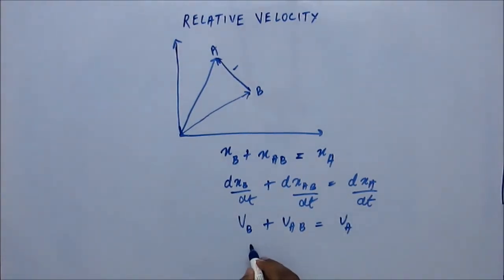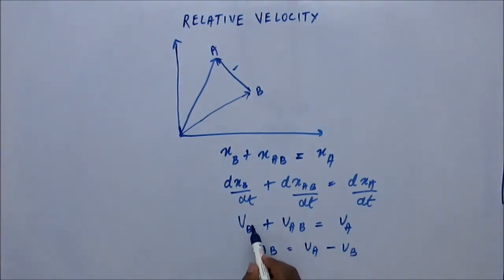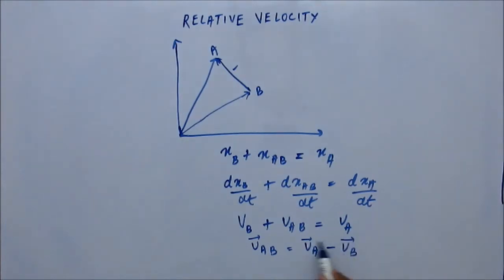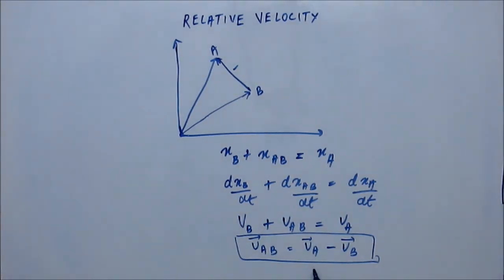From here we can see that the velocity of A with respect to B equals velocity of A minus velocity of B. These are all vectors — I am just putting the vector signs at the last stage, but they all are vectors. So this is how we derive it: velocity of A with respect to B is equal to velocity of A minus velocity of B. This is the first formula that we are studying in relative velocity.